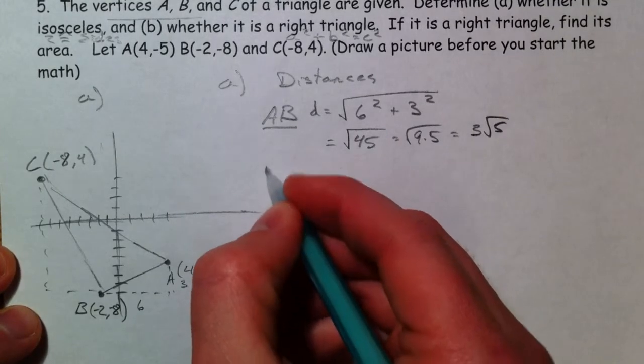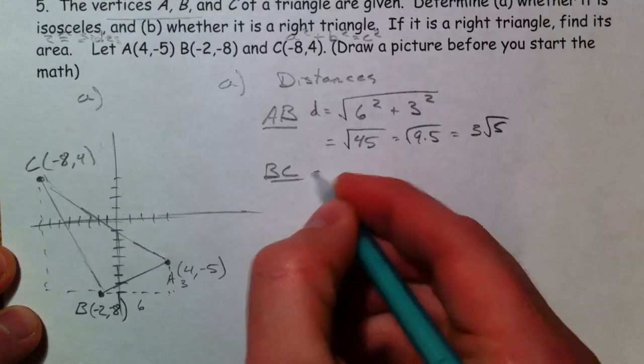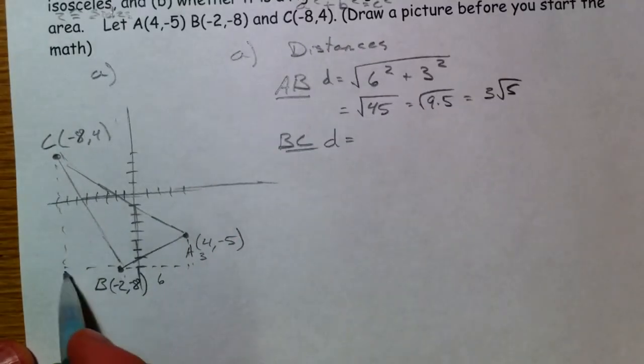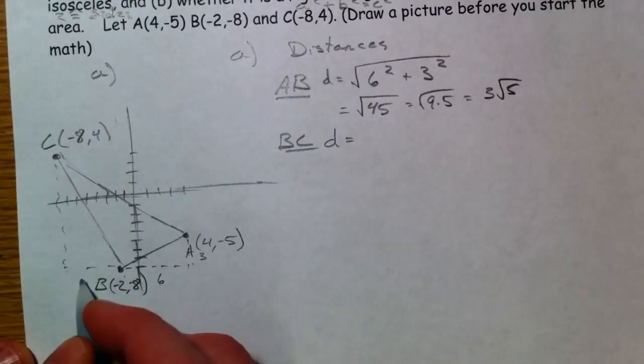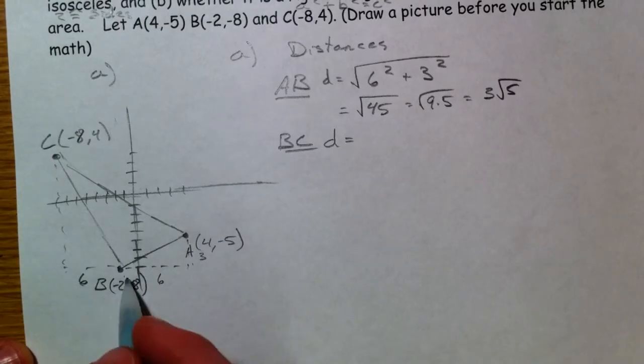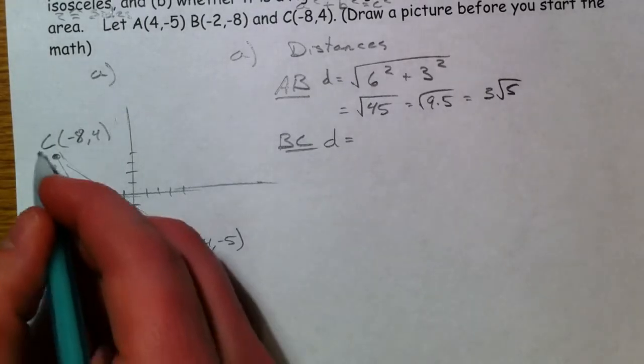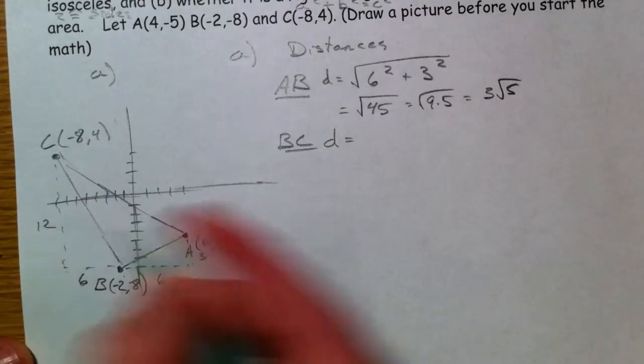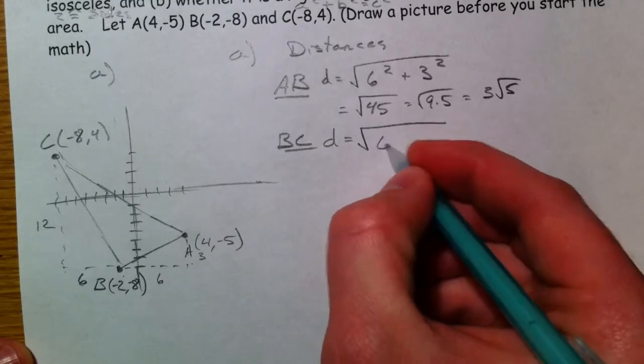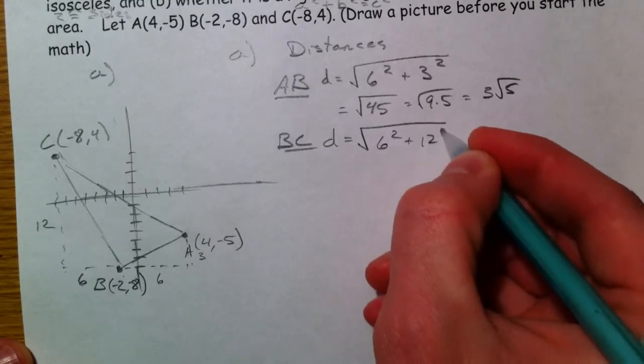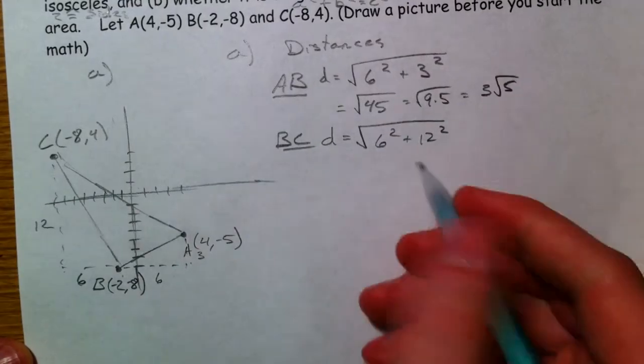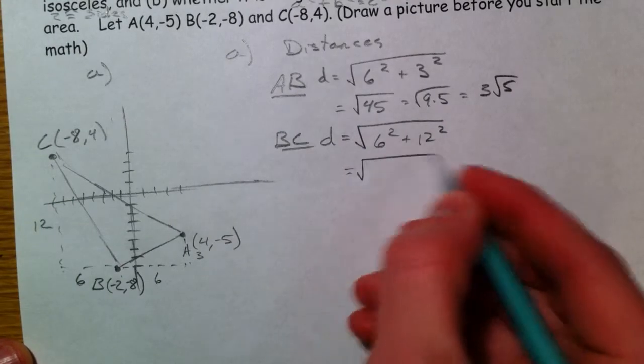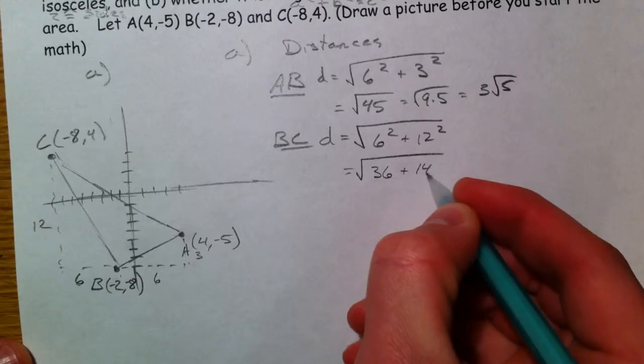And BC. To get from -2 to -8 in the x's, that's a 6. And to get from -8 to 4, 8 back up to the x-axis plus another 4 is 12. So we have 6 squared plus 12 squared. Notice if you're using Pythagorean or distance formula, all the negatives cancel out here. You get 36 plus 144.